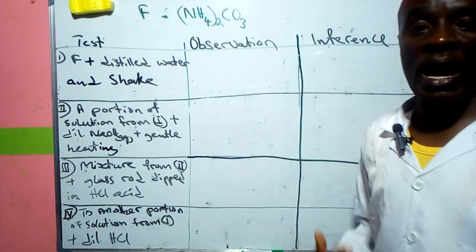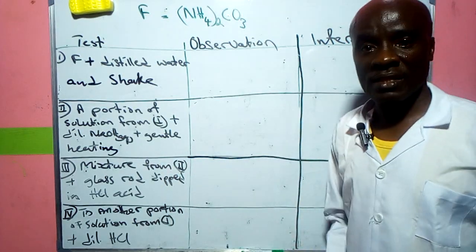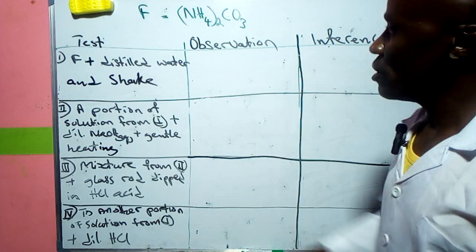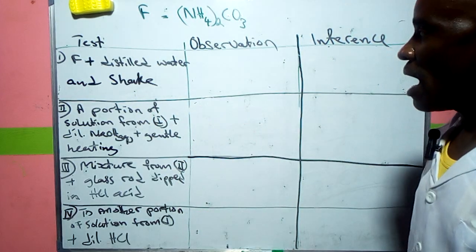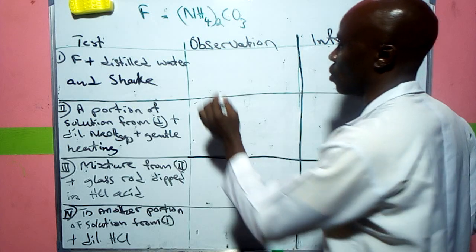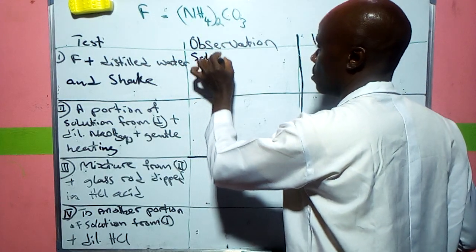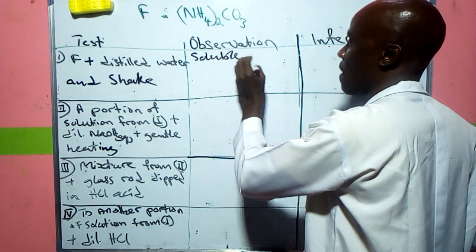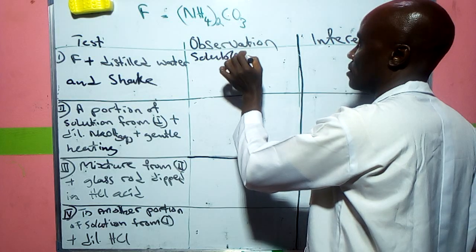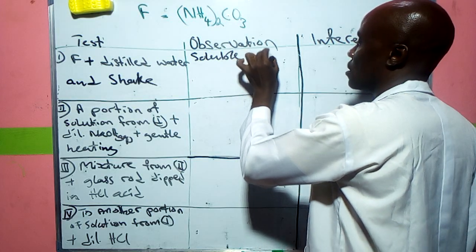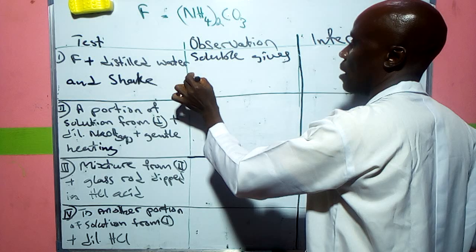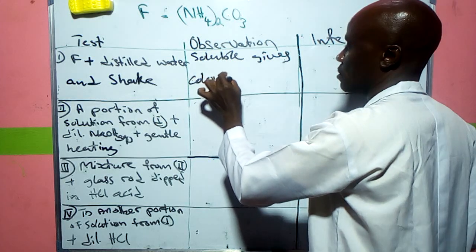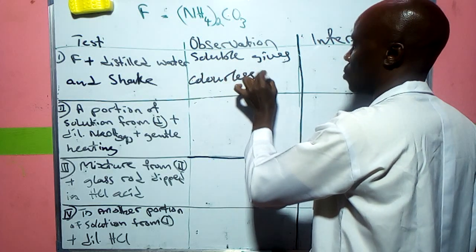The first test is that F plus distilled water and shake. What you have here is soluble, and then gives a colorless solution.